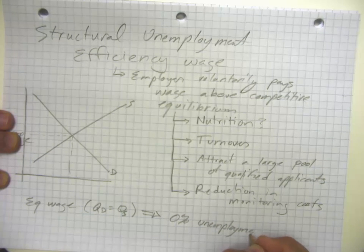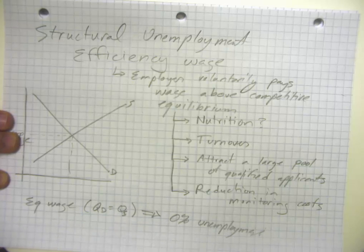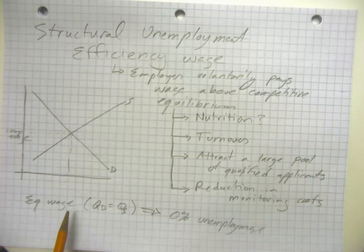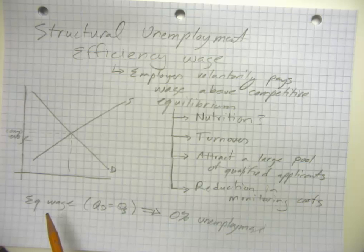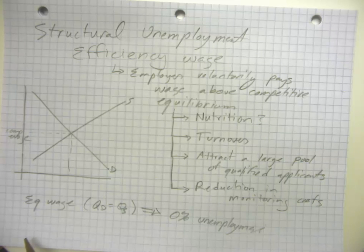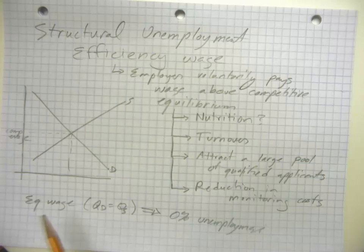Because remember, unemployment is a mismatch between quantity demanded and quantity supplied. Now if the unemployment rate is zero and all employers are paying the same wage, then how much do I care if you fire me? Not very much, because the unemployment rate is zero and I just walk next door to the next place down and they hire me.